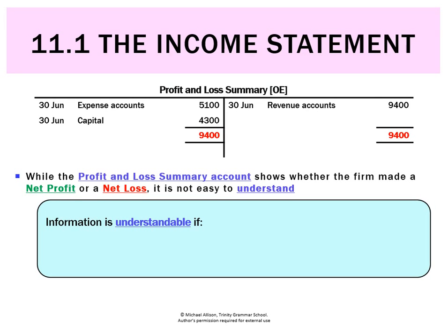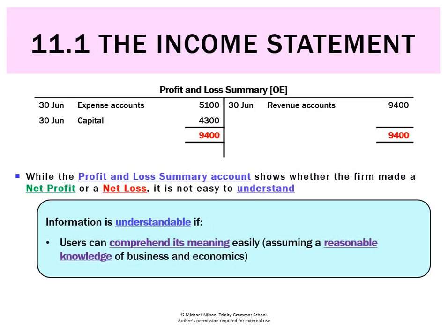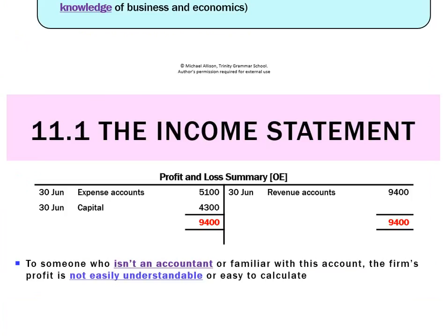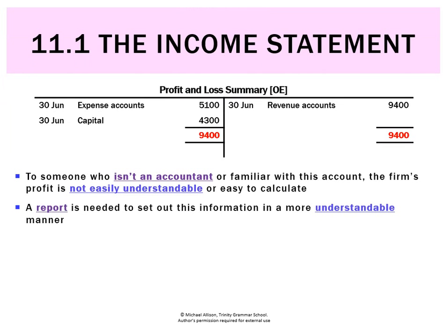The problem with the profit/loss summary ledger is that it's not easy to understand. Someone without much accounting background might not be able to tell whether a profit or loss was made. Secondly, we can't see what the individual revenues were — there's just one giant figure and one giant expense figure. Understandability means whether someone can comprehend its meaning easily, and just looking at the profit/loss summary account, you can't do that.